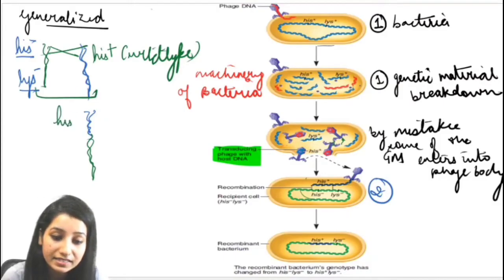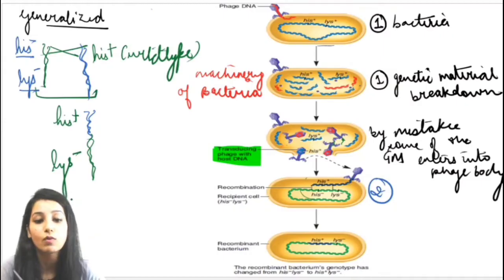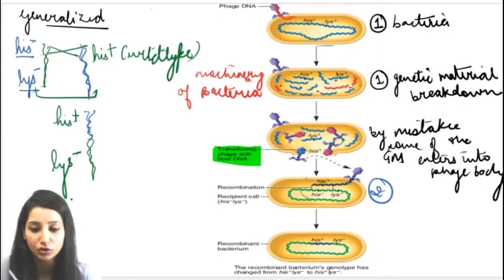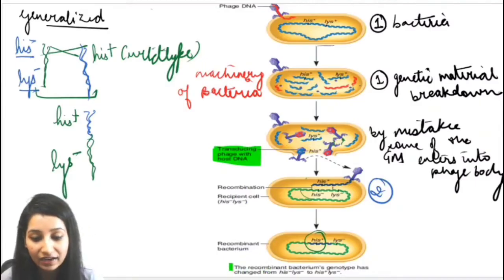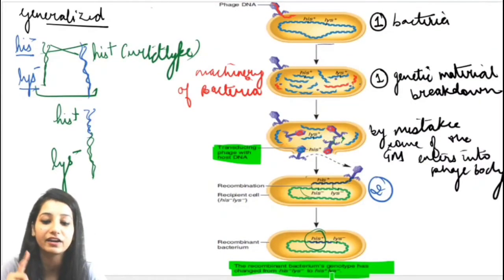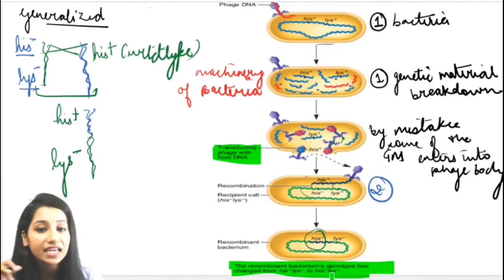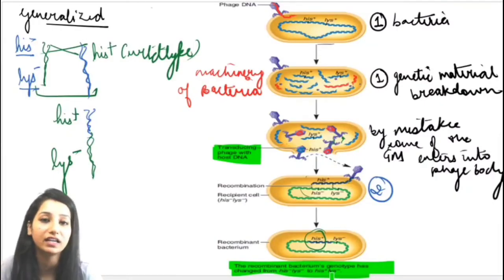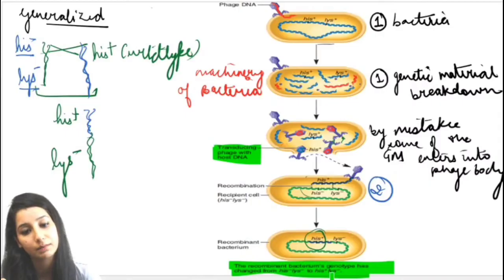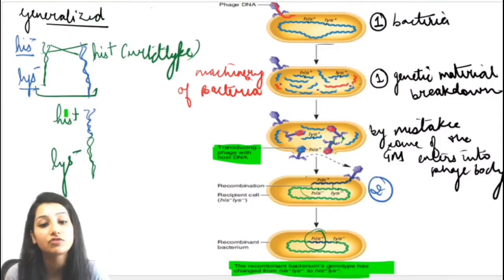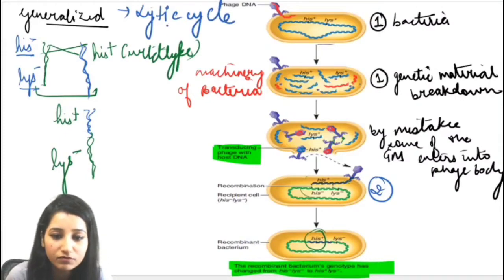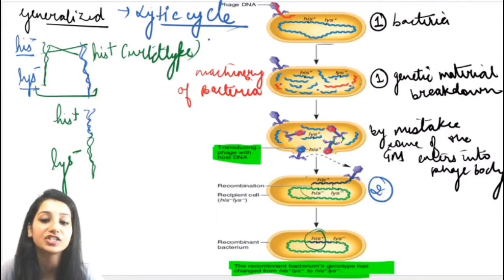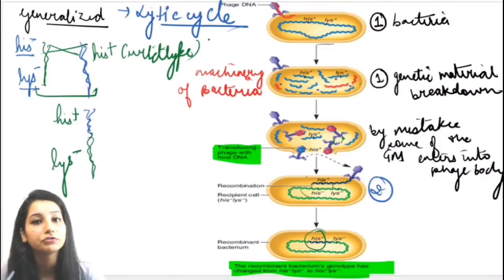Due to recombination, the recipient now has some amount of the donor's DNA present. So it will be histidine-positive and lysine-negative. The histidine region has undergone recombination, so histidine-positive is now in the recipient. We get a recombinant bacteria whose genotype has changed from histidine-negative, lysine-negative to histidine-positive and lysine-negative. This type of cycle in generalized transduction is known as the lytic cycle.